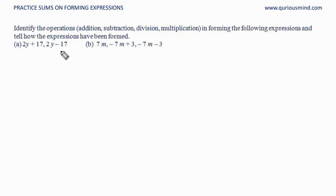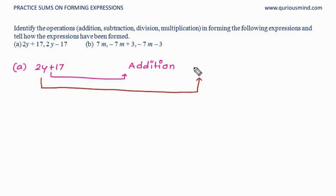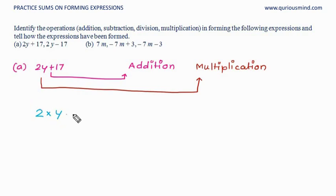Identify the operations — addition, subtraction, division, multiplication — used in forming the following expressions. In (a), the first expression is 2y + 17. The operations used are addition, because of the plus sign, and also multiplication between 2 and y — we know we don't write the multiplication sign when a number and a variable appear together. So first we multiplied 2 by the variable y, and then added 17.